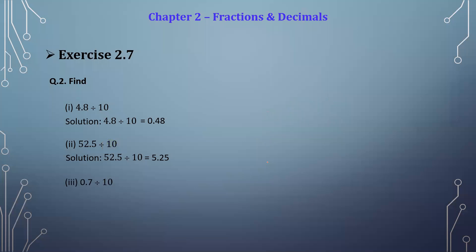The third example is 0.7 divided by 10. Again, we shift the decimal point to the left by one digit. The decimal point is shifted before the zero, because zero is present to the left side. So we get the final answer 0.07. In this way, we shift the decimal point to the left when dividing by 10, 100, or 1000, by as many digits as there are zeros in the divisor.